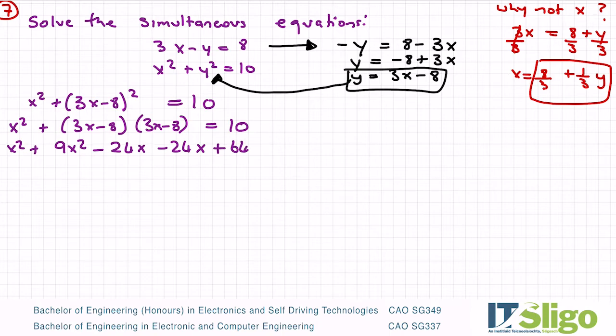I'm going to bring over the 10 so it becomes minus 10 equals 0, because I can see a quadratic forming here. So I have 10x squared, I have minus 48x plus 54 equals 0.